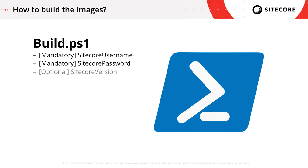The next parameter you can specify is the Sitecore version. This allows you to specify what versions of Sitecore you want to build your images for. There are instructions in the repository to build images for every version of Sitecore from 9.0.2 all the way up to the current version of 9.3. This is an optional parameter, so if you don't specify it, it'll default to only build the images for the latest version, 9.3.